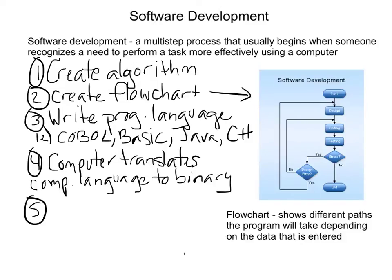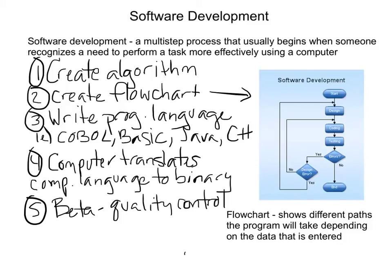The last step is quality control — we're calling it beta. Have you ever heard of when a software program releases a beta version? A beta version is really just a testing environment. Sometimes they release it to a select group of users, and those users figure out what errors there are, so they can fix things up before releasing the full version to the public. Beta is quality control — software development for evaluation.